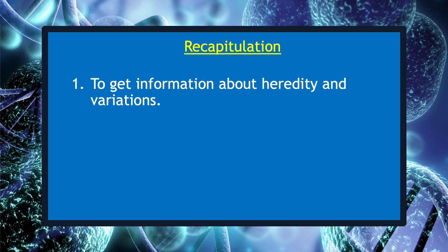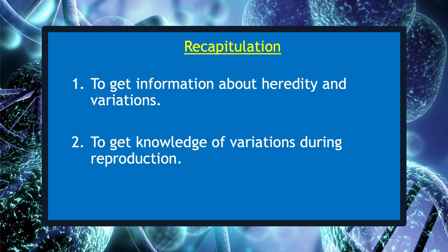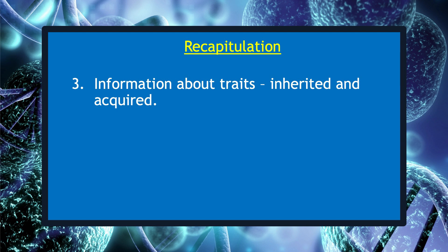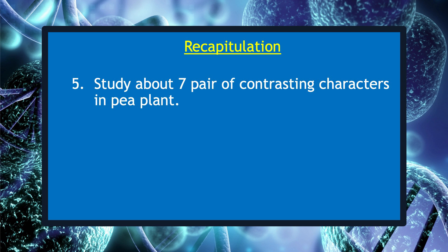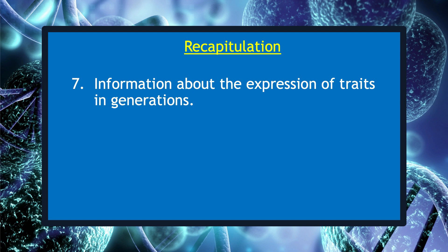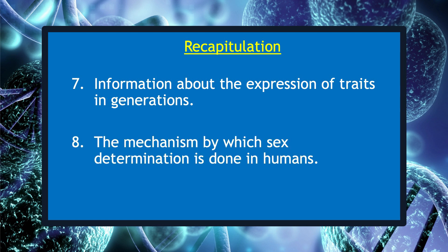We have now understood the chapter Heredity and learned about the following points: heredity and variations; knowledge of variations during reproduction; information about inherited and acquired traits; rules for inheritance of traits and Mendel's contributions; seven pairs of contrasting characters in the pea plant; monohybrid and dihybrid cross; expressions of traits in generations; and the mechanism by which sex determination is done in humans.